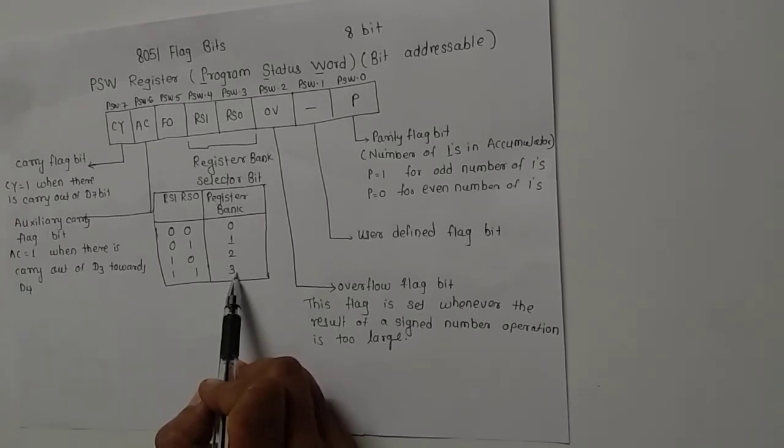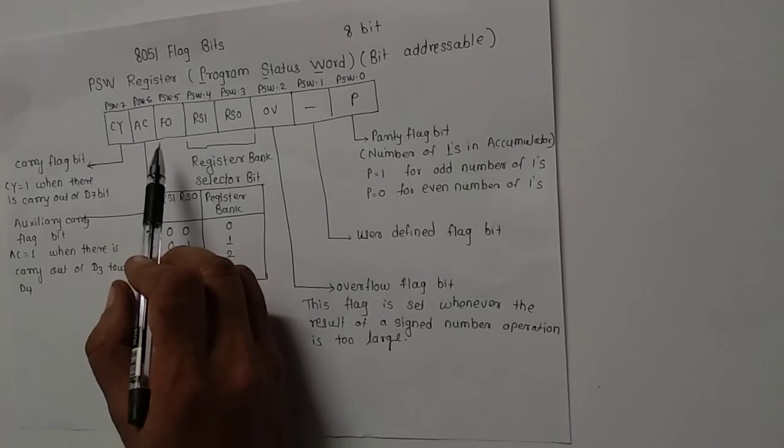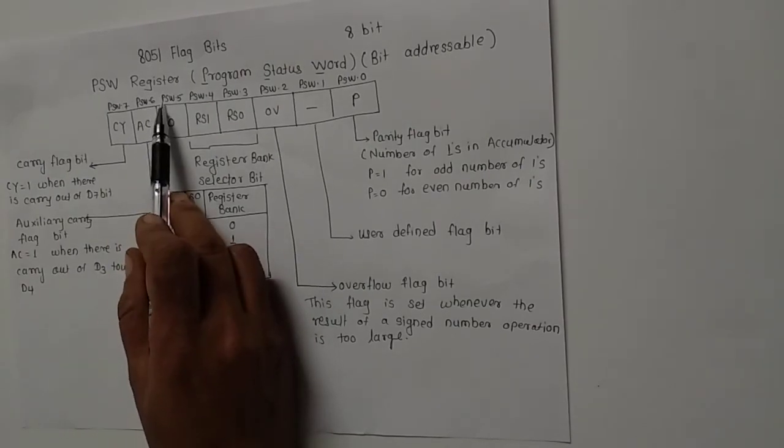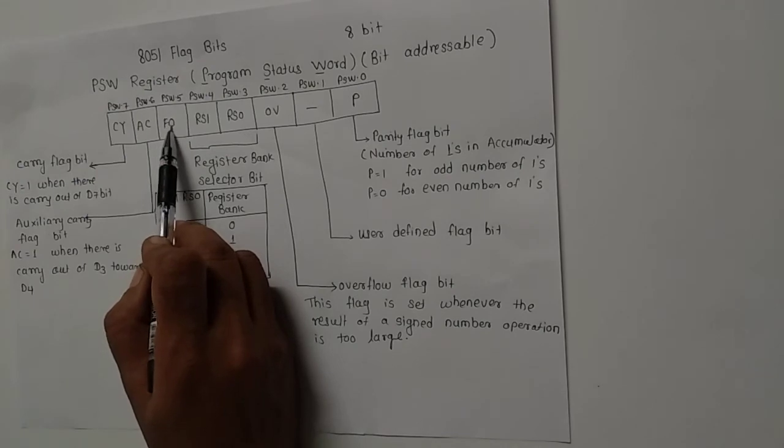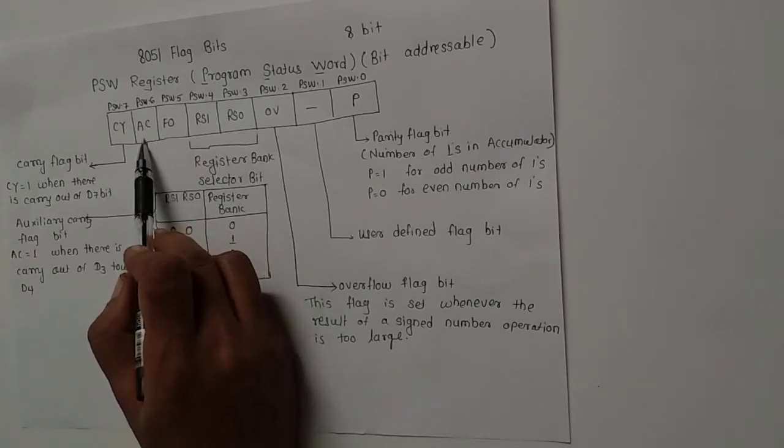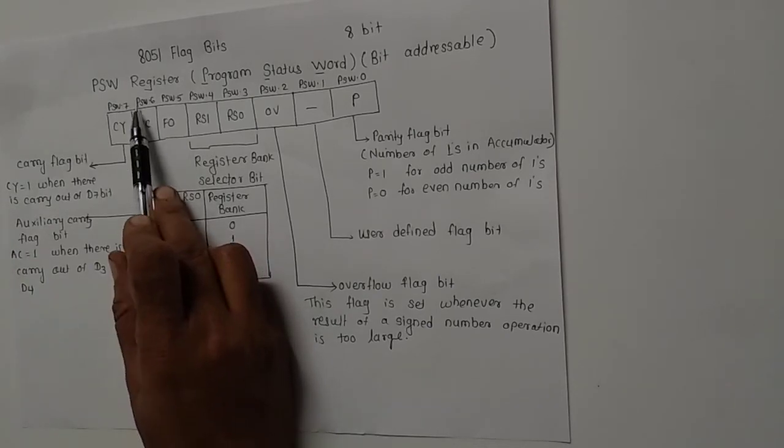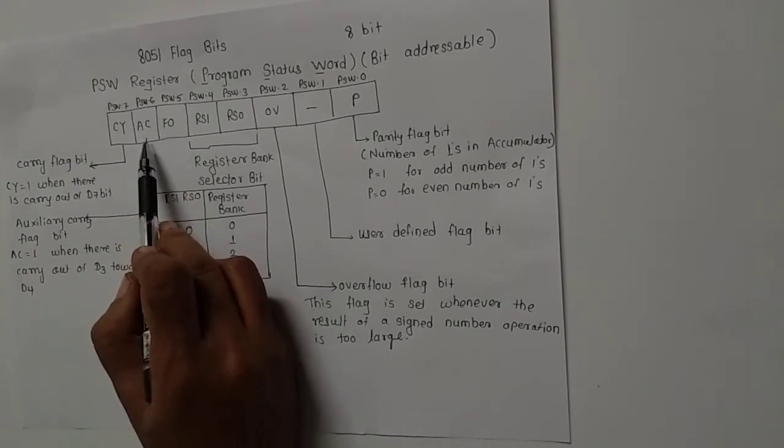Now let us look at the sixth bit of the PSW register, which is PSW.5, which is F0, and it is used for general purpose. The next bit of the PSW register, which is PSW.6, is AC, meaning auxiliary carry flag bit.